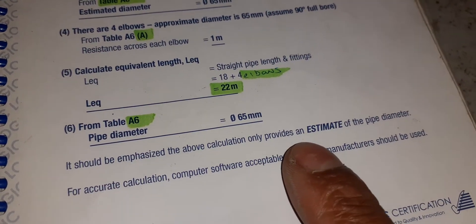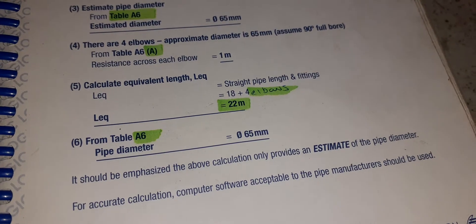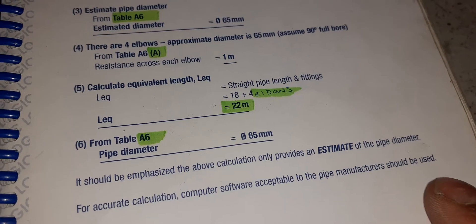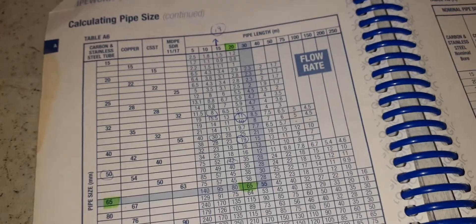It should be emphasized the above calculation only provides an estimate of the pipe diameter. For accurate calculation, computer software acceptable to the pipe manufacturer should be used. So I hope this has helped. Here's the chart - you look for the chart and then you can see...